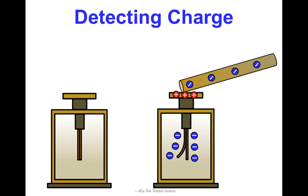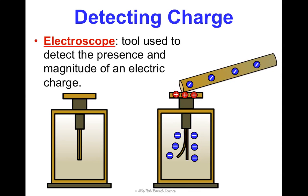So how do we know if something has a charge? There's a pretty simple tool we can use called an electroscope. It can detect the presence and the magnitude of an electric charge. If I bring a negatively charged rod towards the electroscope, I can know that it has a negative charge by the way the electroscope moves — something that will be demonstrated in class to make it make a little bit more sense.